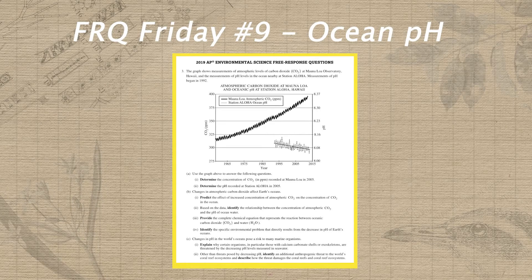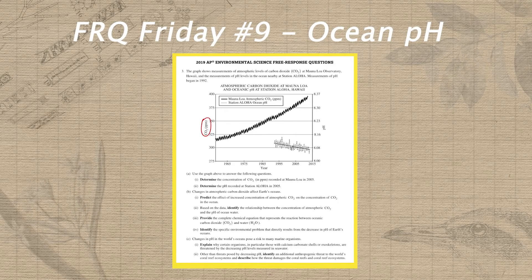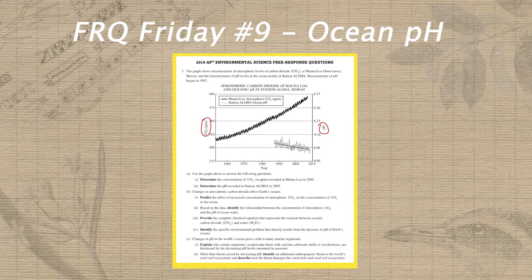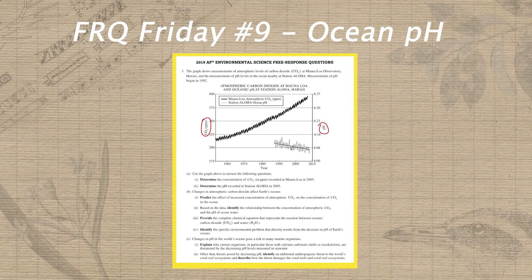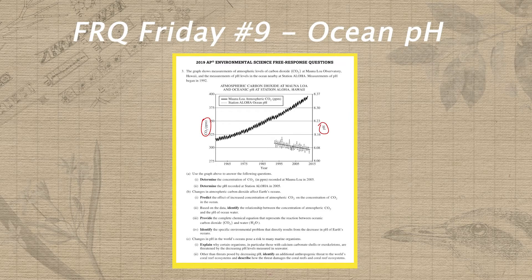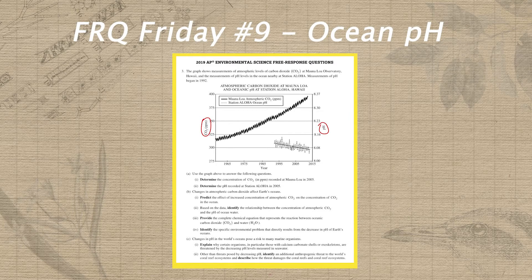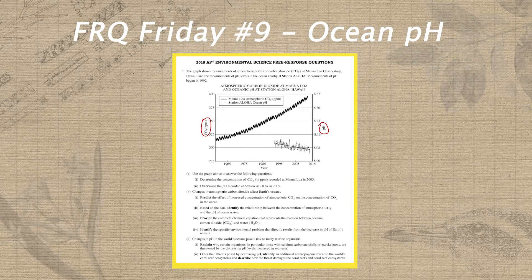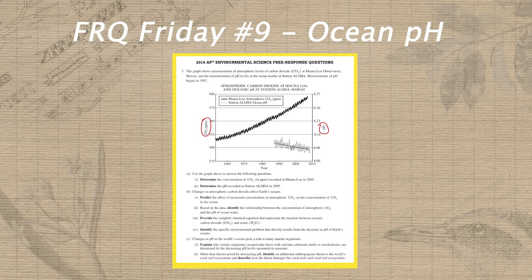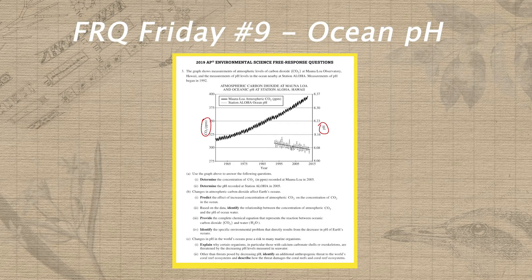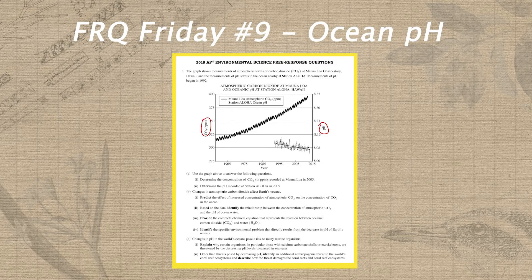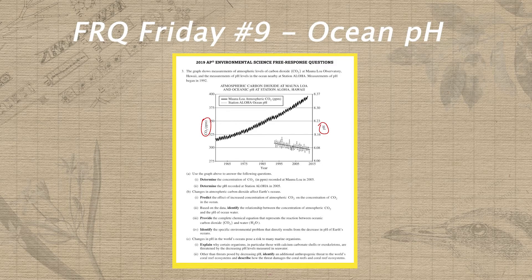The first thing you need to do when you see a graph that has two different Y-axis labels is circle these and really make sure that if you have a question requiring you to identify either carbon dioxide or pH, you're using the correct set of labels so you don't get an easy question wrong. This should be straightforward because pH and CO2 in parts per million are very different — we're definitely not going to have 8.2 parts per million CO2 in the atmosphere, and certainly 350 wouldn't be a pH. But on graphs where labels can be less clear, it's an important step to take.